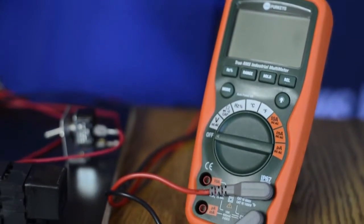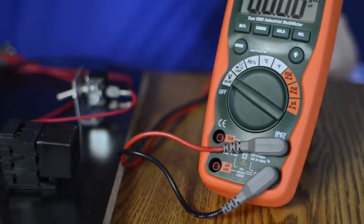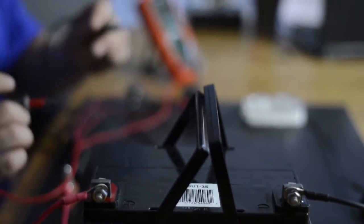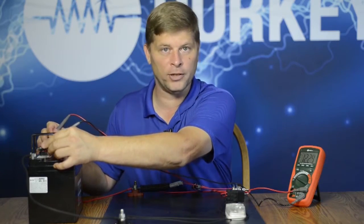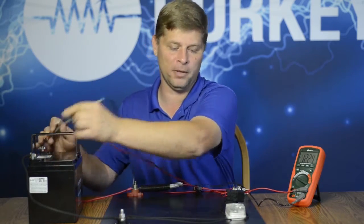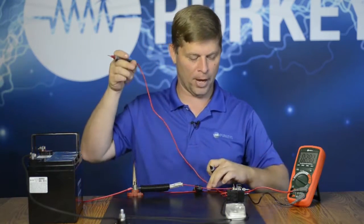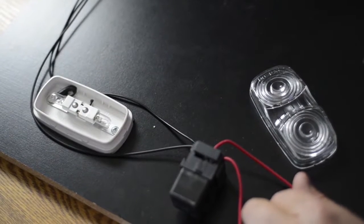We're going to take our meter, put it on voltage, make sure we're on DC, put the red on positive, black on negative. This battery's about 12.2 volts, which is a little bit discharged, but for what we're doing right now that really doesn't matter. All we need to make sure is we do have a power supply for this.